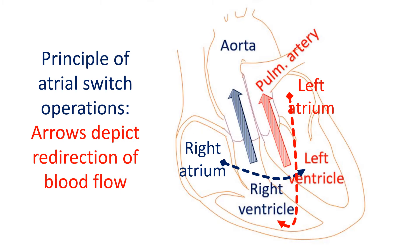In the ideal surgery for transposition of great arteries, the abnormally positioned aorta and pulmonary artery are switched back to their expected positions. That is why that operation is known as the arterial switch operation, which was described in 1975.